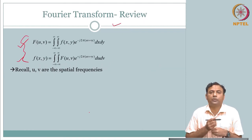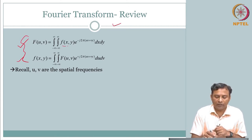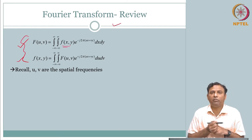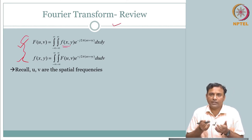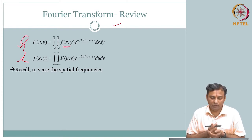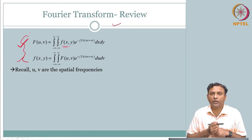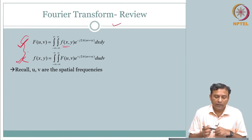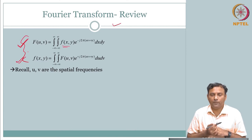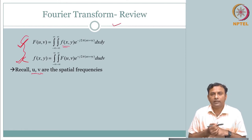Let us start with the Fourier transform review. We have f(x, y), which is your spatial variable in two dimensions — that is what we have been working with. This is called the forward direction: this is your Fourier transform and this is your inverse Fourier transform. u and v are the spatial frequencies.